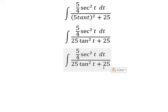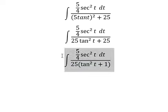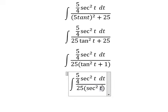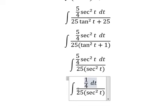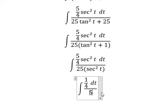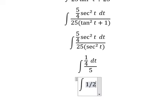We have 25 times tan squared(t). We apply factorization and get secant squared(t). Then we simplify: 5 secant squared(t) cancels on numerator and denominator, and with four times five we have 1 over 20.